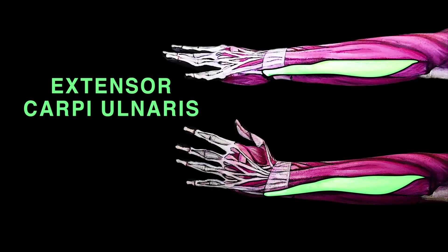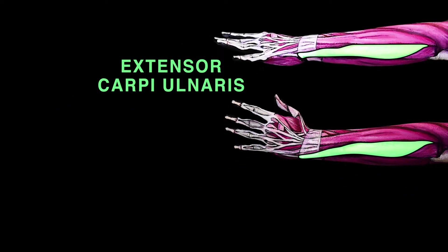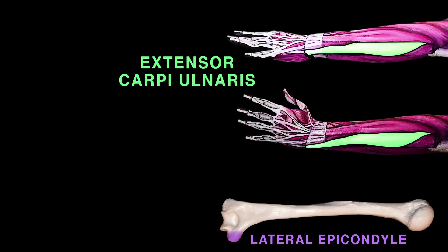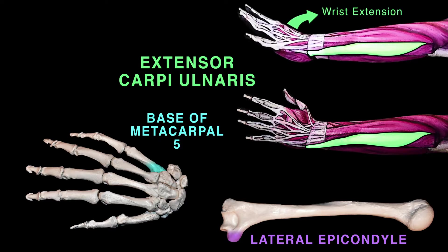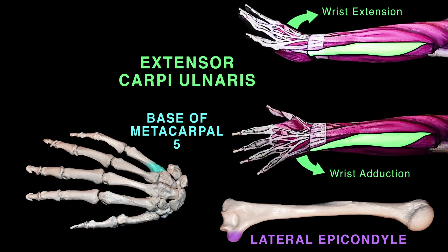The extensor carpi ulnaris originates from the lateral epicondyle of the humerus and attaches to the base of metacarpal 5. It causes extension and adduction of the wrist.